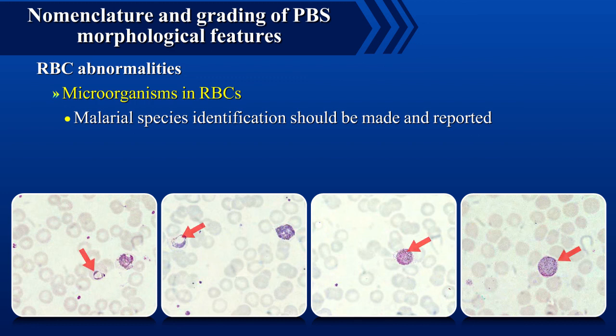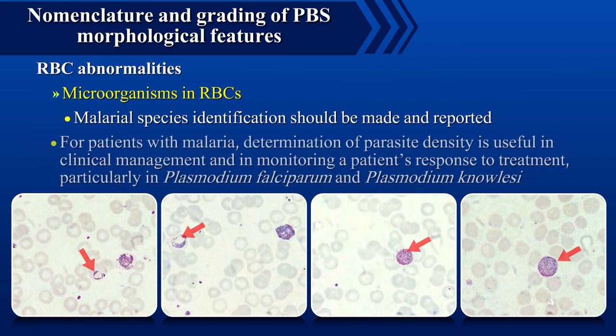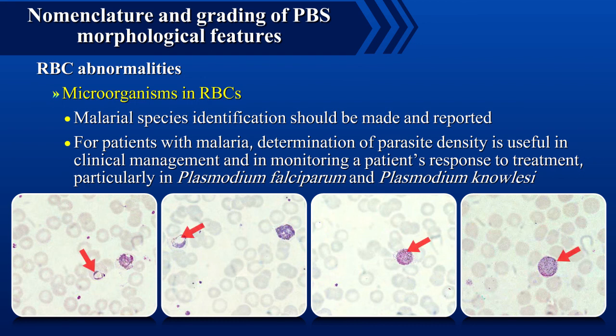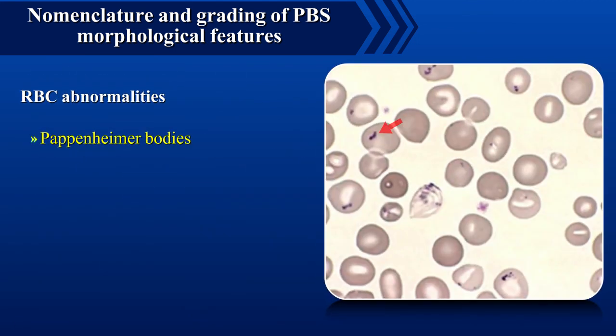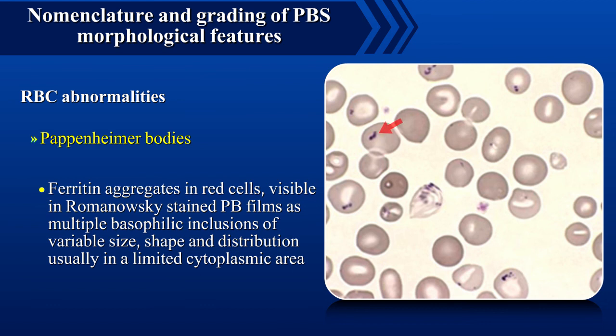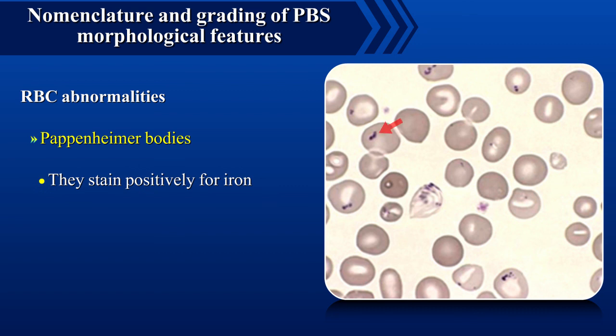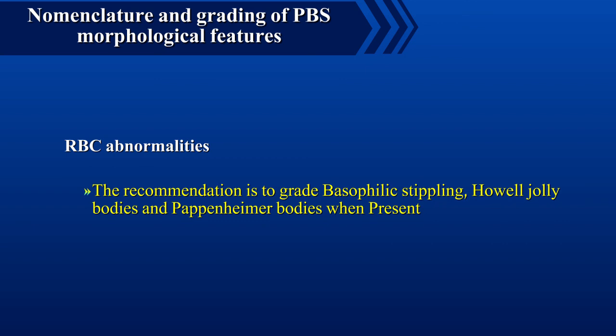Malarial species identification should be made and reported. For patients with malaria, determination of parasite density is useful in clinical management and in monitoring a patient's response to treatment, particularly in Plasmodium falciparum and Plasmodium malariae. Pappenheimer bodies are ferritin aggregates in red cells visible in Romanowski-stained peripheral blood films as multiple basophilic inclusions of variable size, shape, and distribution, usually in a limited cytoplasmic area; they stain positively for iron. The recommendation is to grade basophilic stippling, Howell-Jolly bodies, and Pappenheimer bodies when present.